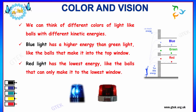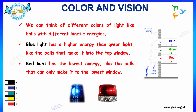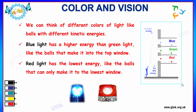Let us now discuss about color and vision. We can think of different colors of light like balls with different kinetic energies. You can see here the depiction which shows the range of energy levels for the colors. In general, the blue light has a higher energy than the green light. We have the range of energy levels for the RGB colors — blue is prioritized over green.